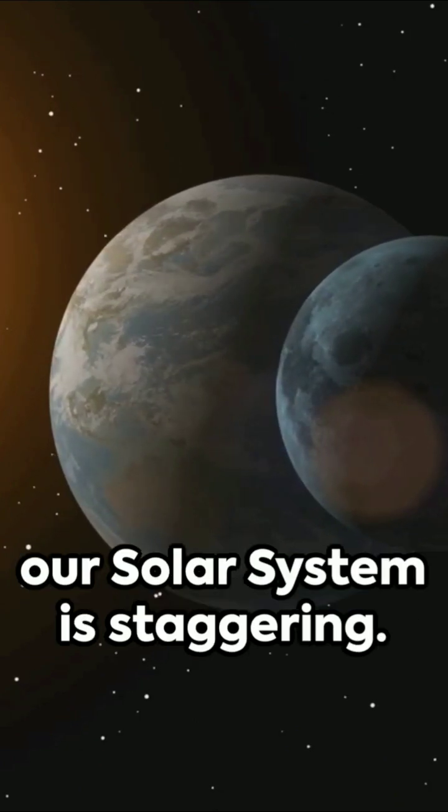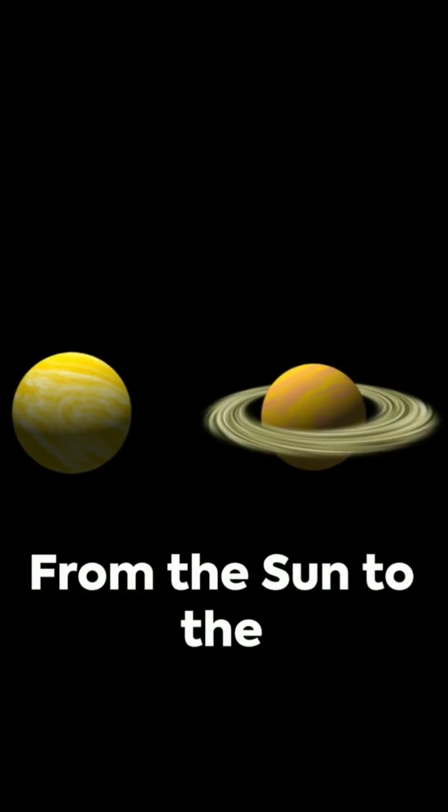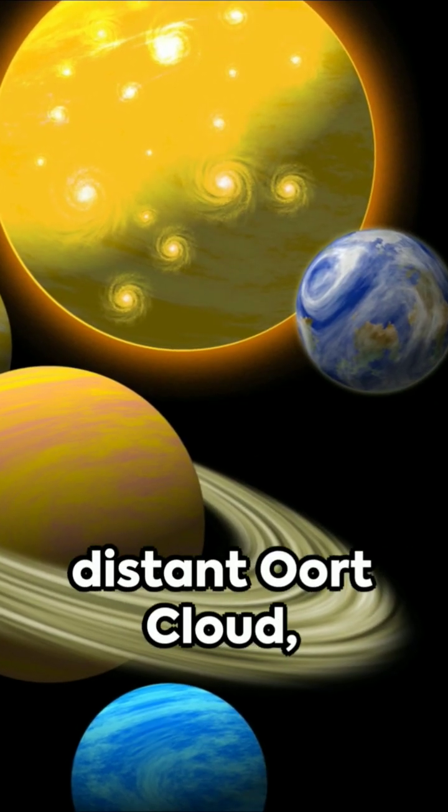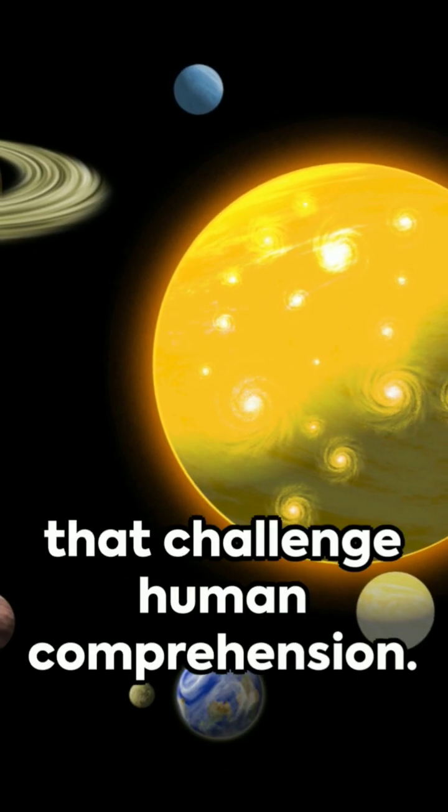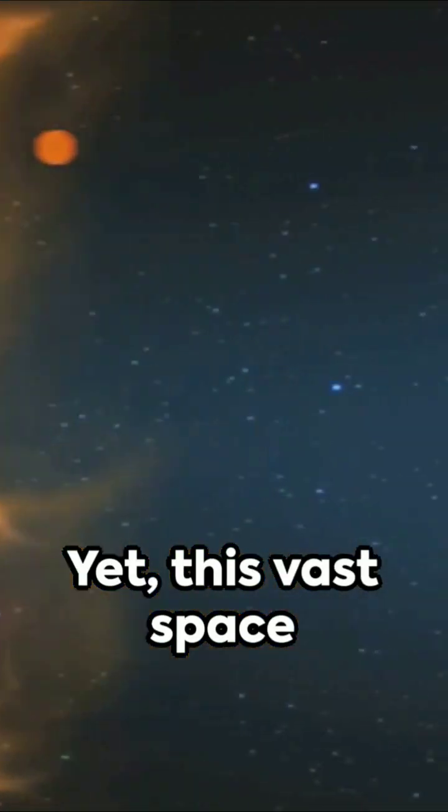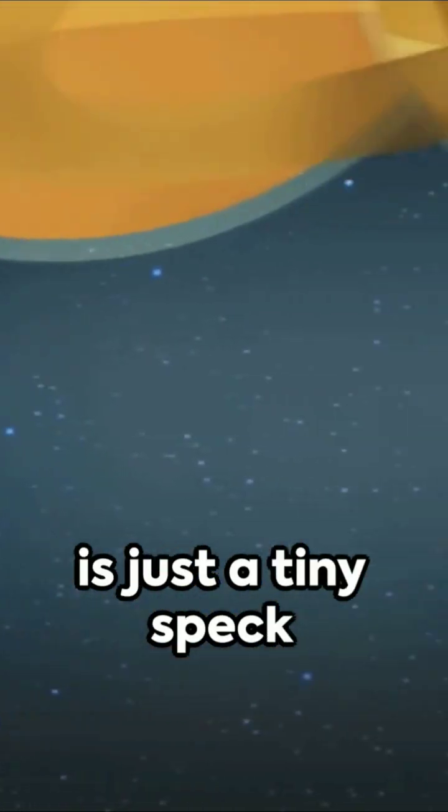The sheer size of our solar system is staggering. From the Sun to the distant Oort Cloud, it spans distances that challenge human comprehension. Yet, this vast space is just a tiny space.